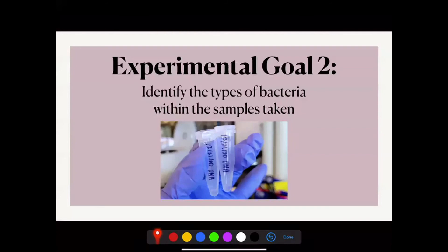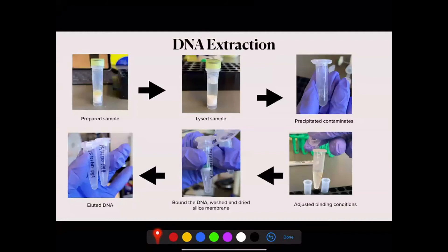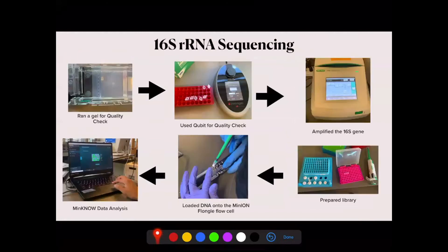My second goal was to identify the types of bacteria within the samples taken. I was able to identify the bacteria using the 16S gene. Using the samples, I extracted DNA for sequencing and used it as a template for PCR to amplify the 16S gene. I used a gel stool extraction kit and followed the instructions to obtain the eluted DNA. For 16S rRNA sequencing, we used MinKNOW software to collect raw data from the device and convert it into base-called reads. EPI2ME software provided base-called data such as genome, barcoding, and taxonomic classification. I used the 16S barcoding kit 24 and the MinION Flongle flow cell.